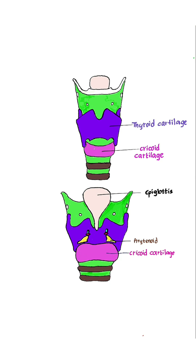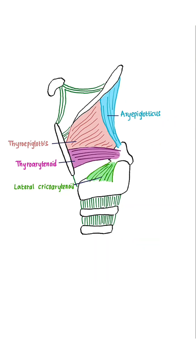Intrinsic muscles include: between cricoid cartilage and thyroid cartilage — cricothyroid; between cricoid and arytenoid — posterior cricoarytenoid and lateral cricoarytenoid; between the two arytenoid cartilages — oblique arytenoid and transverse arytenoid; between arytenoid and epiglottis — aryepiglotticus; and also thyroarytenoid, thyroepiglotticus, and vocalis.